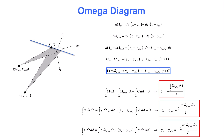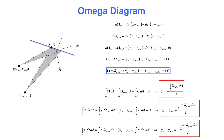That leads to the following procedure for the determination of the final Omega diagram. First, select an arbitrary trial point in the cross section. Second, draw the trial Omega diagram about that trial point, starting the sweeps wherever you want. Third, determine C, zsc, and ysc from the formulas on this slide. Fourth, substitute those values into the blue marked formula to obtain the final Omega diagram.